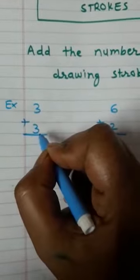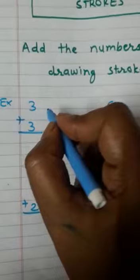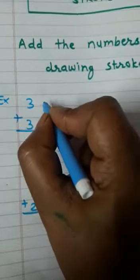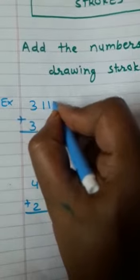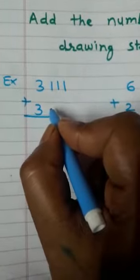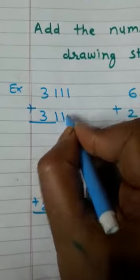3 plus 3. Draw three strokes near number 3: 1, 2, 3. Draw three strokes near number 3: 1, 2, 3.